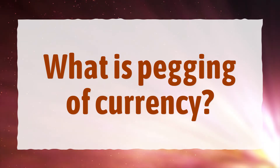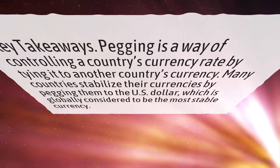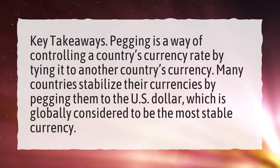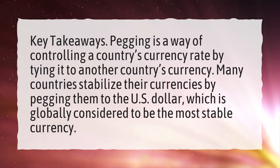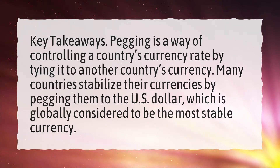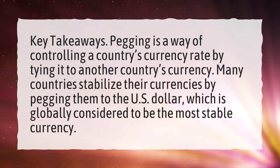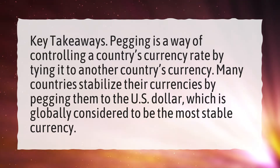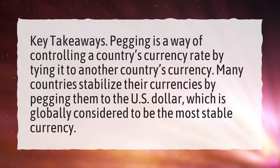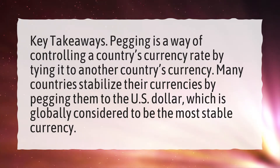What is pegging of currency? Pegging is a way of controlling a country's currency rate by tying it to another country's currency. Many countries stabilize their currencies by pegging them to the US dollar, which is globally considered to be the most stable currency.